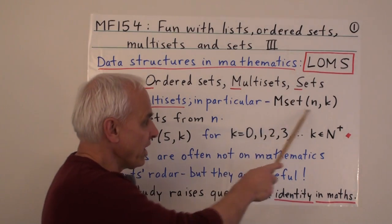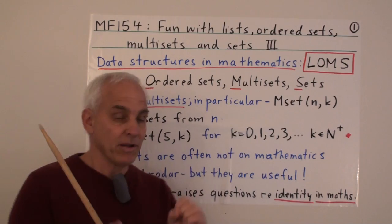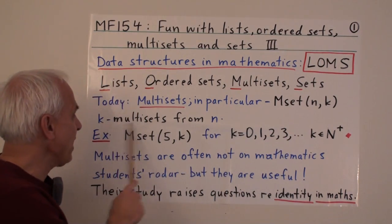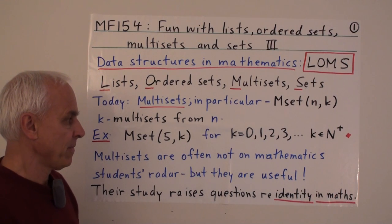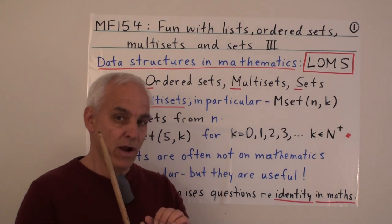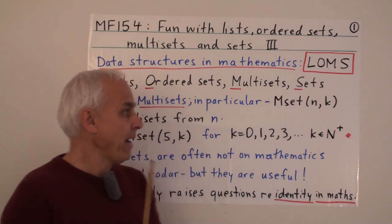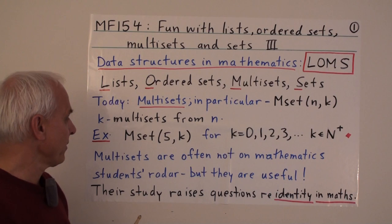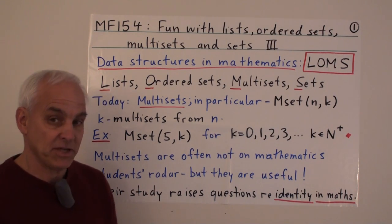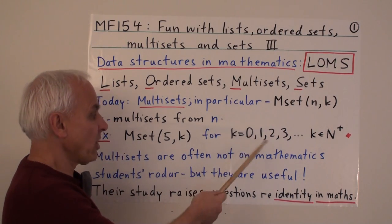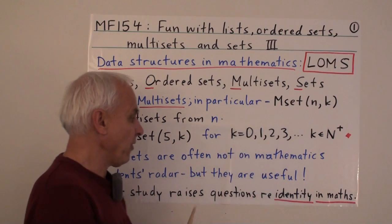In particular, we're going to be looking at very precisely focused multisets, what we call Mset(n,k). These are k-multisets from n. Basically, the elements are chosen from the numbers 1, 2, up to n, and we're allowing k objects all together. For example, we're going to be especially interested in Mset(5,k), so when n equals 5, we'll be looking at this for various values of k, starting with 0, then 1, 2, 3, and so on.